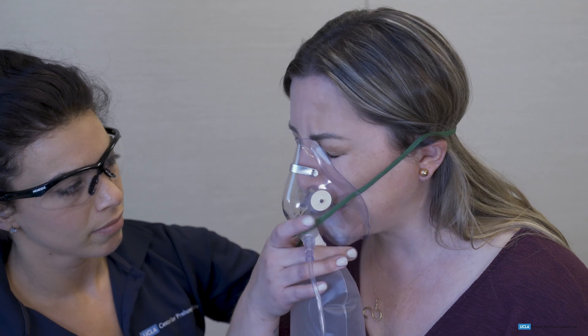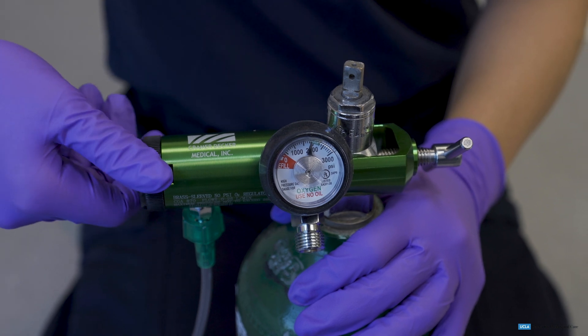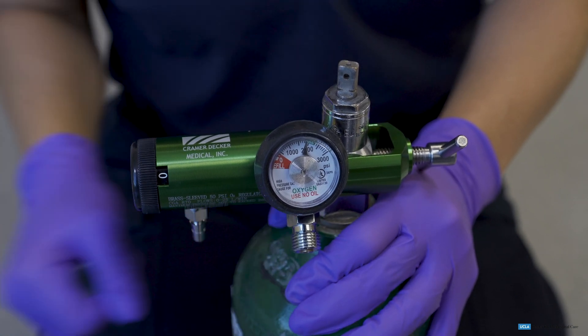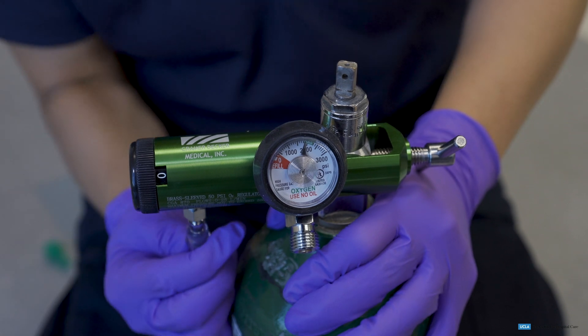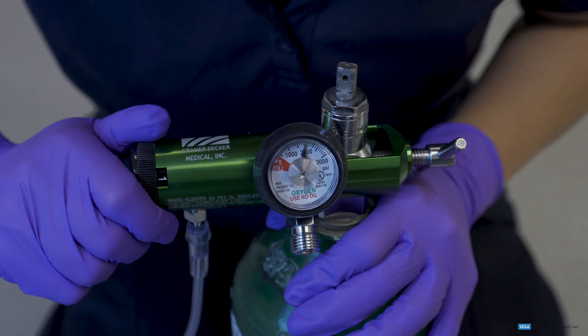If the patient does not tolerate the mask, the EMT may be able to switch to a nasal cannula. After removing the non-rebreather and turning off the flow of oxygen, the EMT detaches the oxygen tubing and connects the nasal cannula.